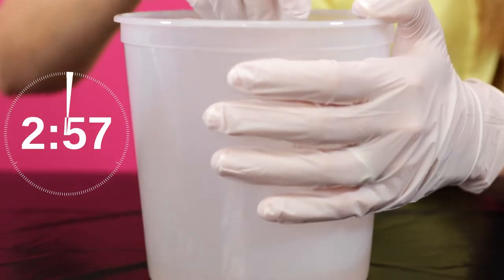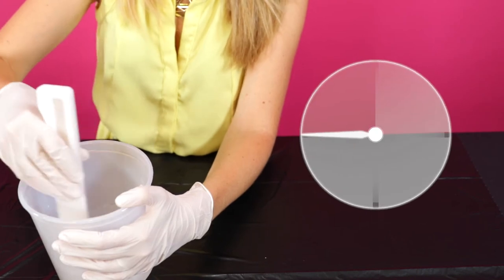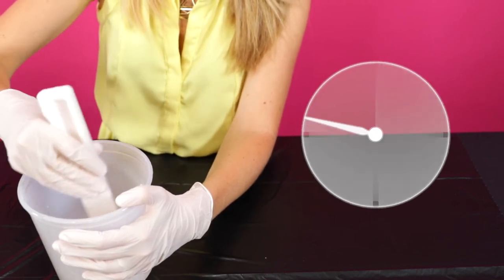Stir your resin and hardener mixture thoroughly for at least 3 full minutes. You'll have about 45 minutes of working time to spread it before it starts to cure.